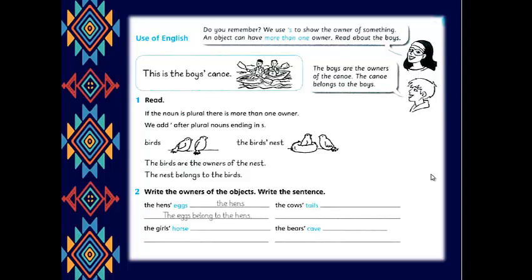This is the boys' canoe. The boys are the owners of the canoe. The canoe belongs to the boys. If the noun is plural, there is more than one owner. We add apostrophe after plural nouns ending in S.